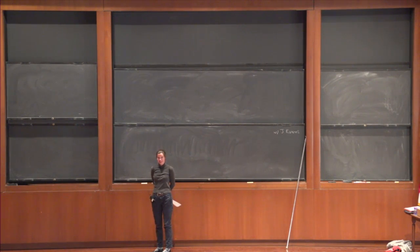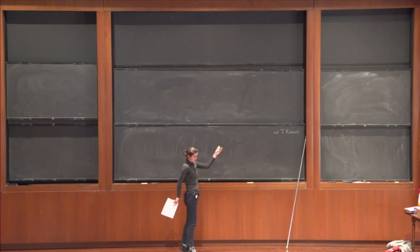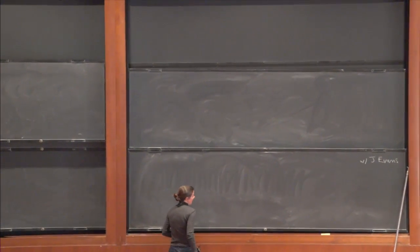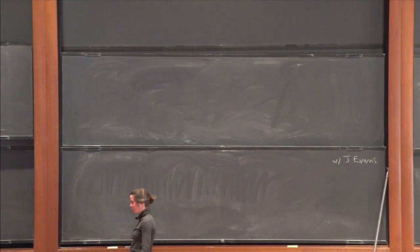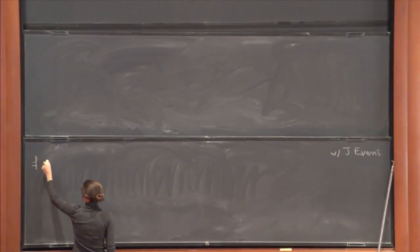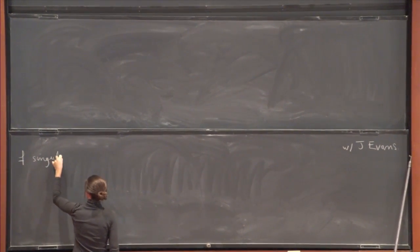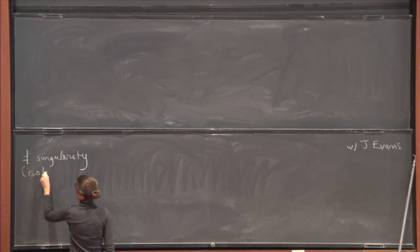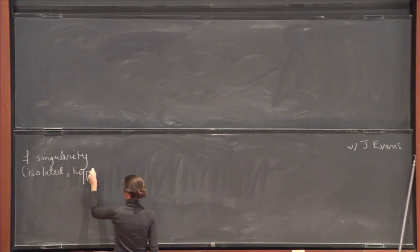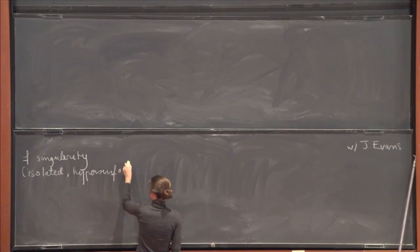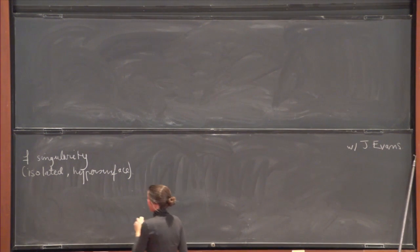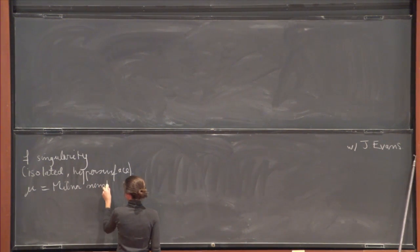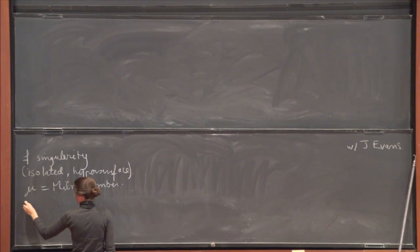Okay, thank you very much for the introduction and for the invitation, so it's the same Johnny Evans. So, as motivation, the overarching question is, suppose you just have F some singularity, let's just say we're specifying to an isolated hypersurface singularity with say Milner number mu and Milner fiber M sub F.